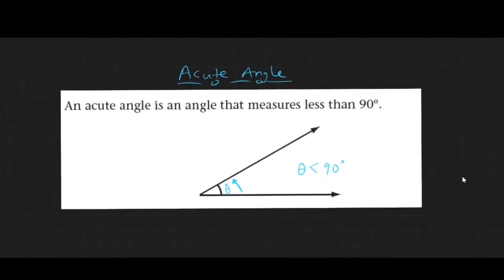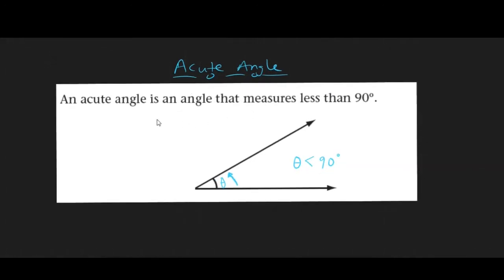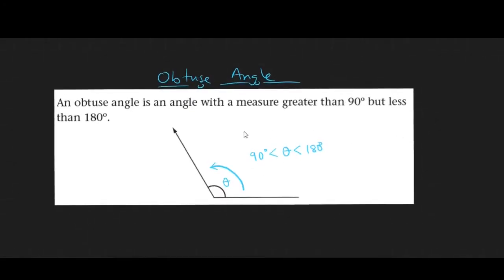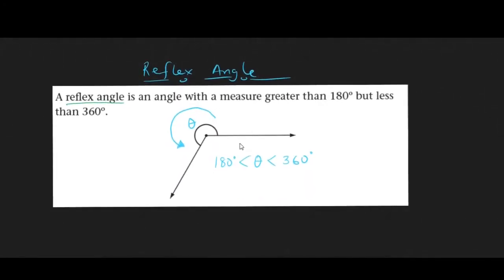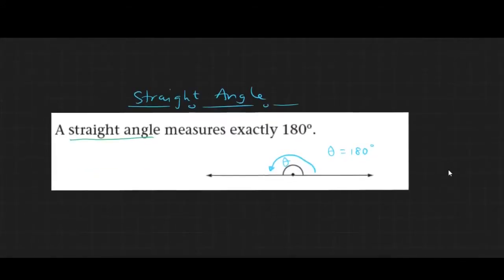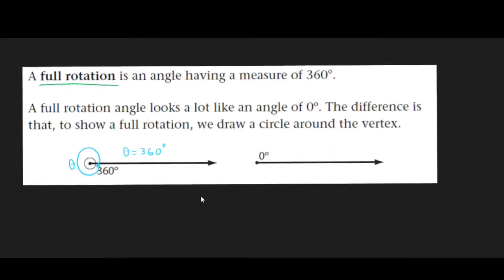We have different types of angles. We have an acute angle which is an angle that measures less than 90 degrees. Then we have an obtuse angle which measures between 90 degrees and 180 — so it is greater than 90 but less than 180 degrees. Then we have reflex angles which measure between 180 and 360 degrees. Then we have a straight angle which is exactly 180 degrees, or it measures on a straight line.